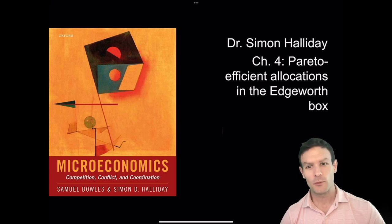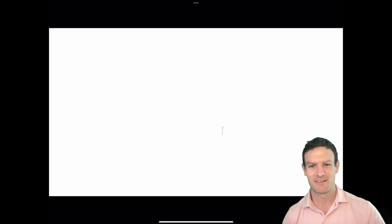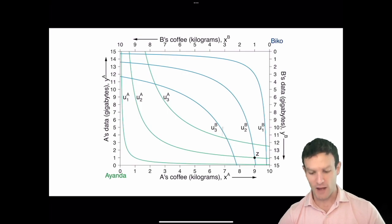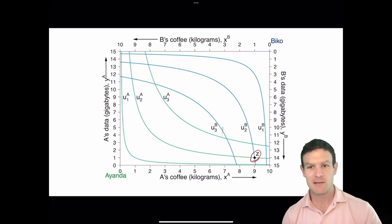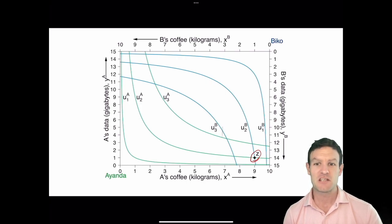Hello everyone. Here we're going to talk about Pareto efficient allocations in the Edgeworth box. This is the Edgeworth box that we looked at previously, and we identified that there is this point, point Z. Point Z is the endowment point — it's some allocation where each of them has an amount.